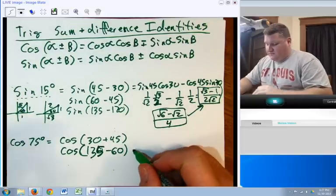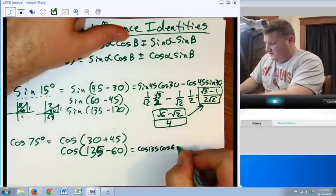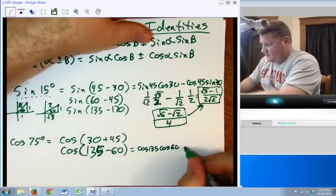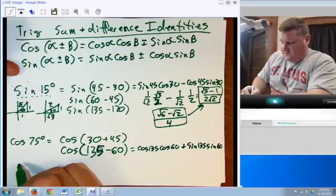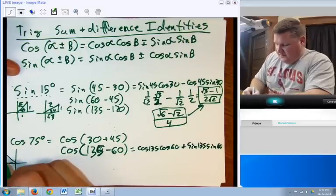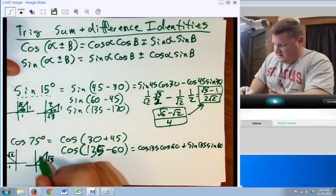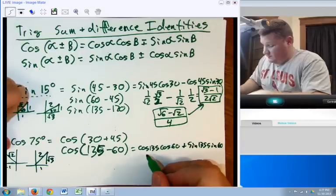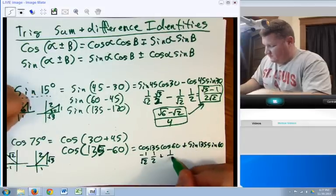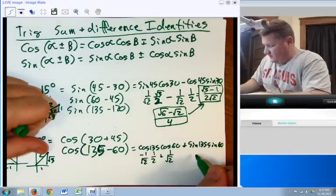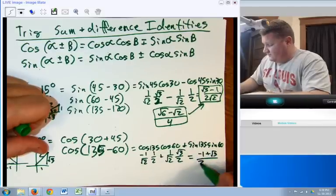135 minus 60 is 75. So let's go ahead and use that guy. So we say cosine 135, cosine 60. Now, since this is minus, it's going to be plus sine 135, sine 60. Let's draw them out. 135 is 1, negative 1, root 2. This is 60, so it is root 3, 1, and 2. We say cosine 135 is negative 1 over root 2. Cosine 60 is 1 over 2 plus sine 135, 1 over root 2. Sine 60 is root 3 over 2. And your answer is negative 1 plus root 3 all over 2 root 2. There it is. It is that simple.